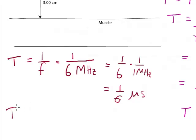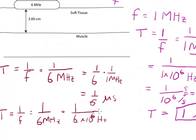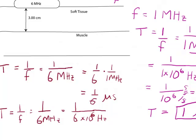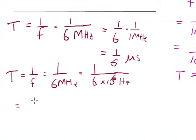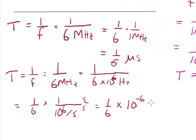Okay, now I could have done that the long way, which is to take 1 over F equals 1 over 6 megahertz, which is equal to 1 over 6 times 10 to the sixth hertz. And then I can divide this up. So this is equal to 1 sixth times 1 over 10 to the sixth per second. Seconds over seconds gives me 1 sixth times 10 to the minus 6 seconds.